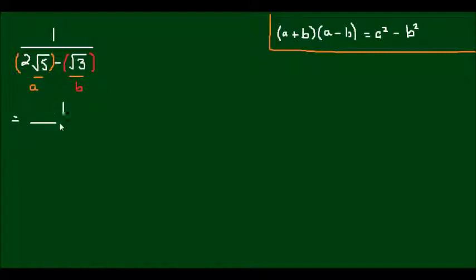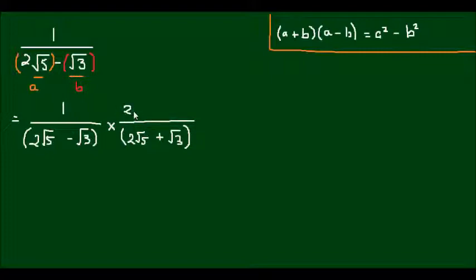So I'm going to multiply this denominator by 2√5 plus √3. But as always with fractions, if I multiply the bottom by 2√5 plus √3, I'm also going to have to multiply the top by 2√5 plus √3, so effectively I'm multiplying this expression by 1.